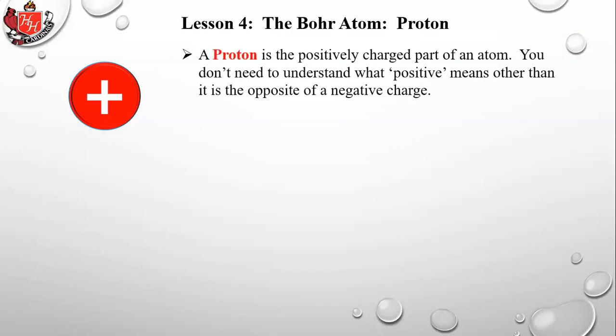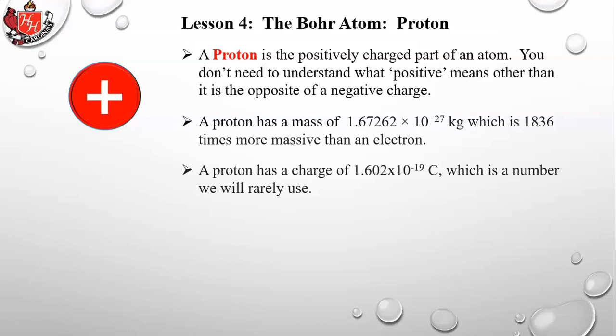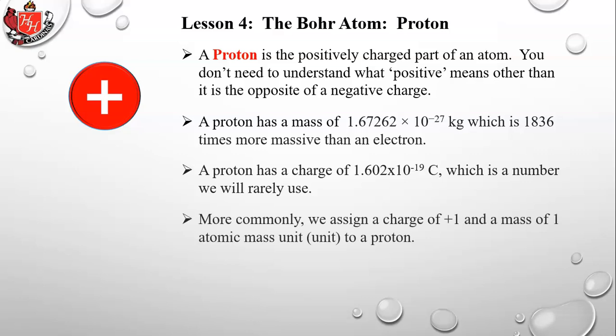A proton is the positively charged part of an atom. Its mass is about 1.6 × 10⁻²⁷ kg — about 1,836 times more massive than an electron. Protons and electrons have equal and opposite charges. A proton has a charge of 1.602 × 10⁻¹⁹ coulombs, but more commonly we assign it a charge of +1 and a mass of one atomic mass unit.